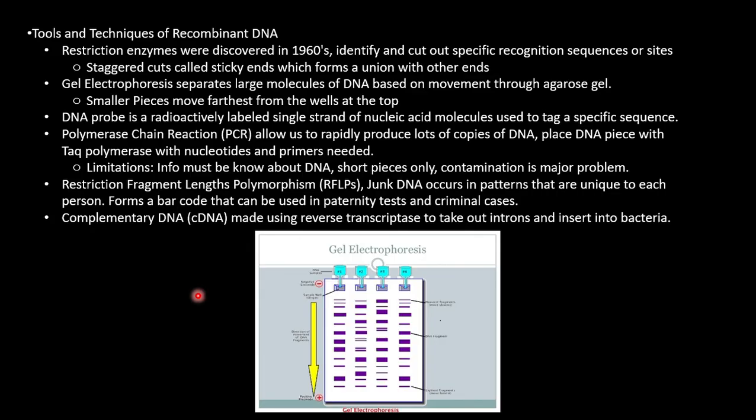PCR, polymerase chain reaction, allows you to rapidly produce lots of copies of DNA by placing the DNA piece with Taq polymerase with nucleotides and primer needed, and it will work together to create lots of copies. Some limitations though: you must know a lot about the DNA before doing this. It only works for shorter pieces, and contamination is a major problem. Any piece of your own DNA or skin cells will actually ruin this.